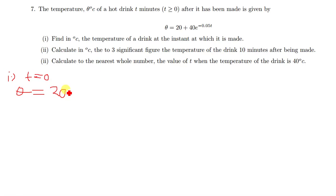I'm going to have θ = 20 + 40e^(-0.05t). This negative 0.05 is multiplied by t, which is zero. So negative 0.05 times zero will just give us zero, so it's the same as putting zero there.